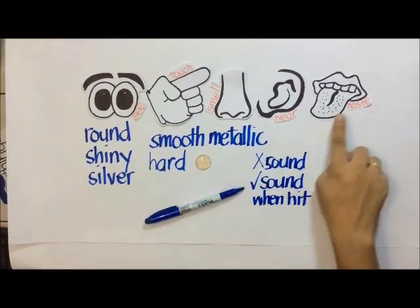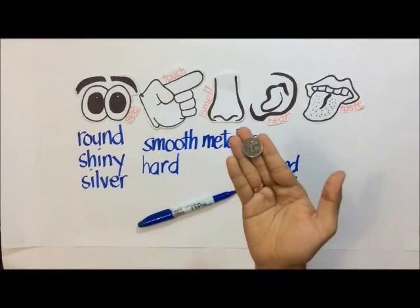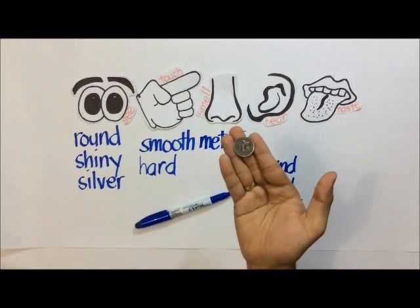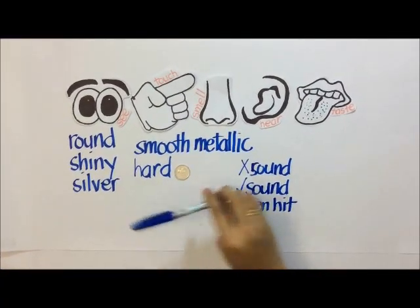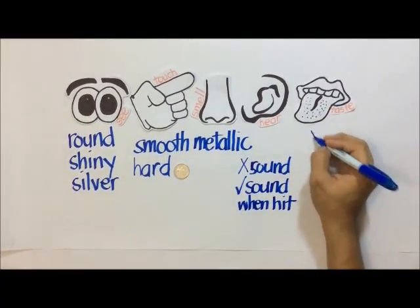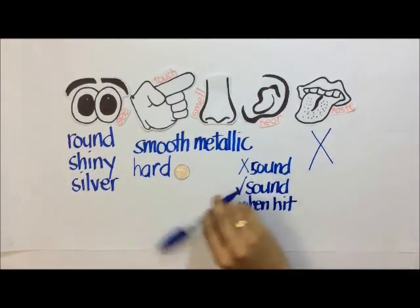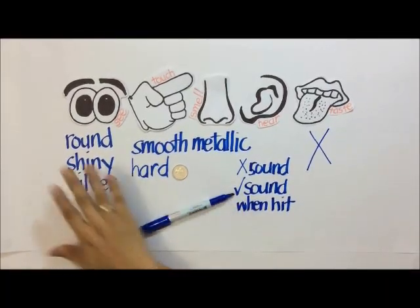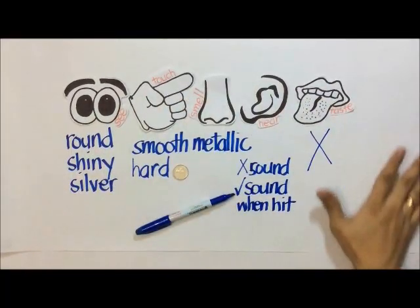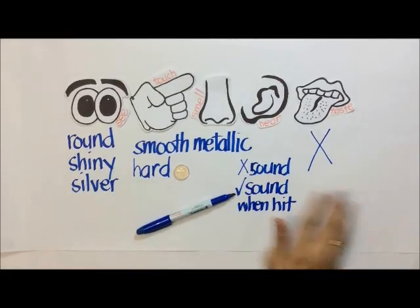How about our tongue? Do you think it's safe to taste the object? No. Therefore, there are some things that cannot be observed using the sense of taste. Now we have a lot of observations.